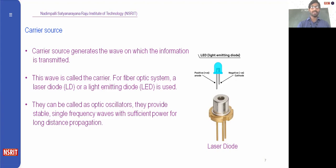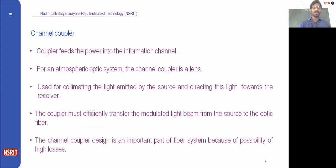Now, channel couplers — once the signal comes out from your light sources, that is LED or laser, it should be transmitted into a fiber properly, so we need couplers. The coupler feeds the power into the information channel, which is the optical fiber cable. For an atmospheric optic system, the channel coupler is a lens, used for collimating the light emitted by the source and directing this light towards the receiver. Collimating means the spreading of the light rays.